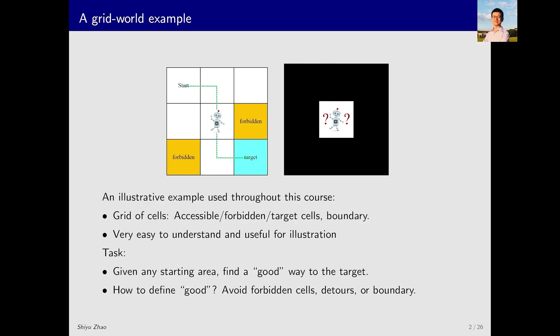First, an example that will be frequently used throughout this course is the grid world example. What is a grid world? It is a world consisting of a grid where a robot moves around.